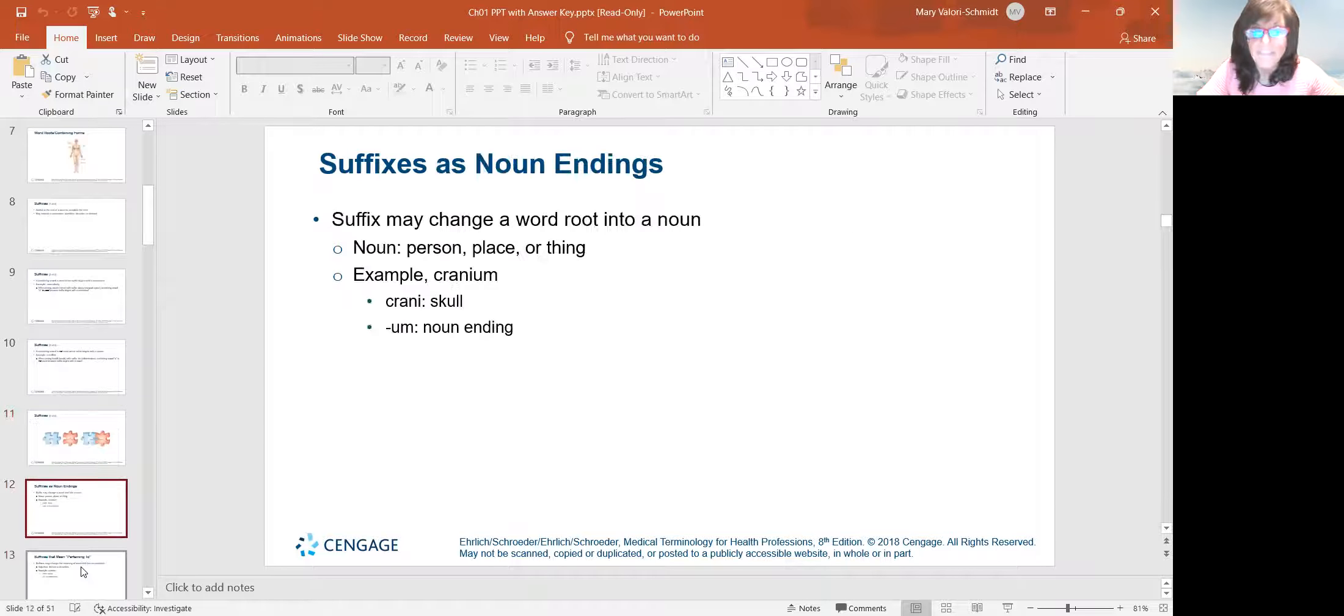Now we'll talk about suffixes as noun endings. A suffix can change the word root into a noun. And we all know back from school, a noun is a person, place, or thing. An example is cranium. Your skull, and the noun ending is um. So that makes it a noun. When we talk about the cranium, we're talking about the skull.